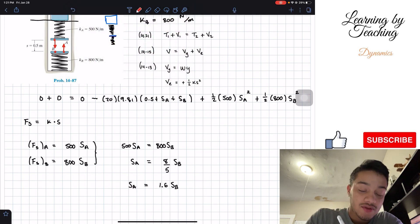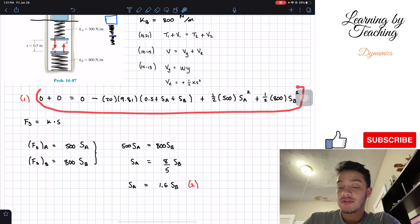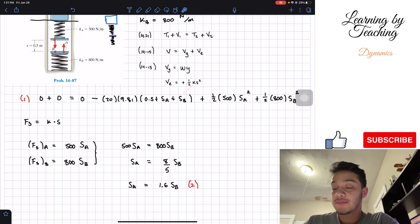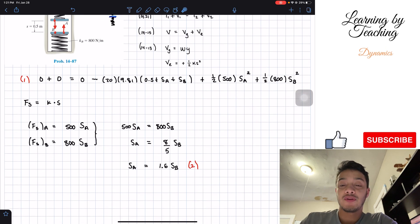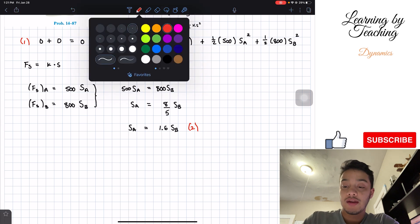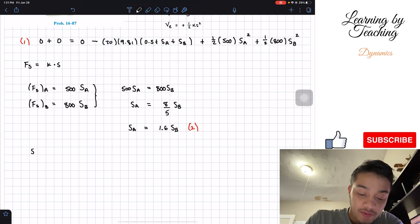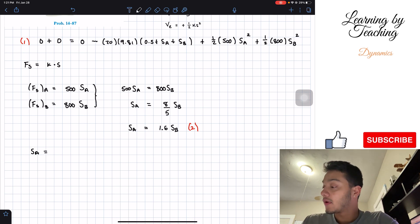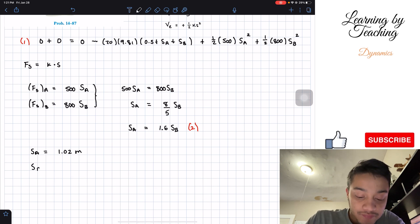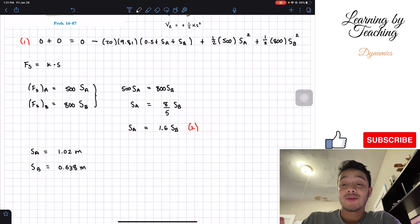Due to the nature of equation 1, which has SA to the first power, SB to the first power, SA to the second, SB to the second, it's better if we solve this system of equations by utilizing a computer. I went ahead and did that, and I solved for SA equal to 1.02 meters, and for SB we will have a total of 0.63 meters if we round to three decimal places. These are our final answers for this problem.